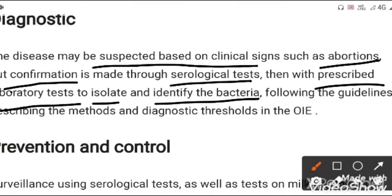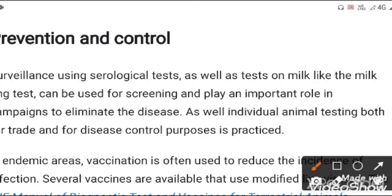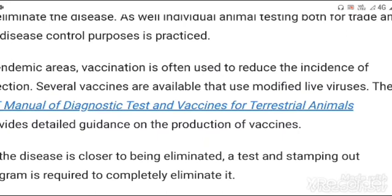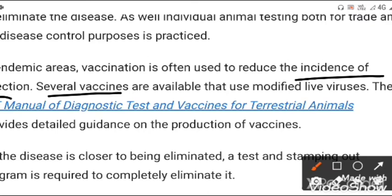For prevention and control, surveillance using serological tests and milk ring tests plays an important role in campaigns to eliminate the disease. Individual animal testing for trade and disease control purposes is also practiced. In endemic areas, vaccination is often used to reduce the incidence of infection. Several vaccines using modified live organisms are available; in America, RB-51 is the major live vaccine used for brucellosis.